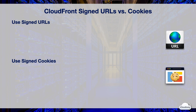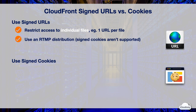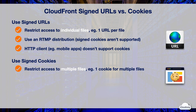CloudFront signed URLs and signed cookies allow you to control who can access your content. You should use signed URLs to restrict access to individual files, as you can create one signed URL per file — for each file that users try to access, you create a different URL. If you have an RTMP distribution instead of an HTTP distribution, you should choose signed URLs, as signed cookies aren't supported by RTMP. If your users are using a custom HTTP client that doesn't support signed cookies, such as mobile apps, you should choose signed URLs. You should use signed cookies if you want to provide access to multiple restricted files, as you can create one cookie for multiple files — for example, to give paid members access to all your content. You should also choose signed cookies when you don't want to change the current URLs.